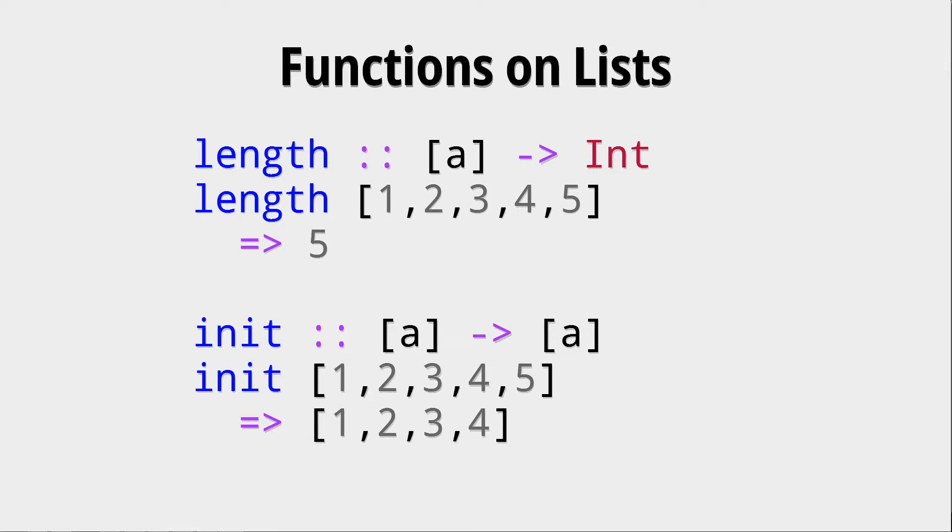There is a function for determining the length of a list, and then there is init, which gives you a list with the last element removed. When I'm talking about removed, I don't mean that the element gets removed from the list, since every data type in Haskell is immutable. It gives you a copy of that list without the last element.